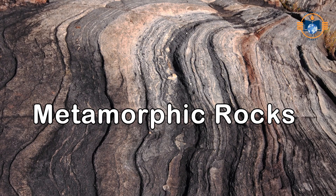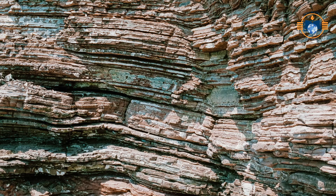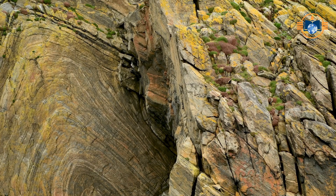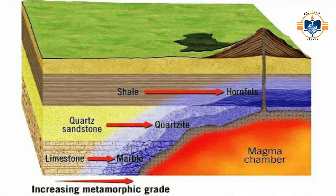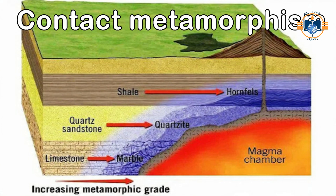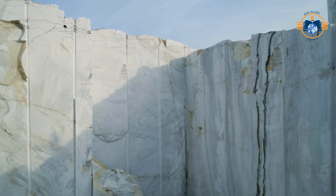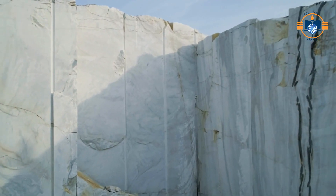Metamorphic rocks were originally a sedimentary rock, an igneous rock, or even another sort of metamorphic rock. Metamorphism literally means change in form. Rocks that are deeply buried underground can become subject to very high temperatures and intense pressures. Being in these environments for millions of years will change the rocks physically or chemically, or both. Sometimes, already buried rocks may come in contact with hot igneous material and, without becoming molten themselves, they become baked or cooked – this is known as contact metamorphism. When limestone is subjected to metamorphism, it becomes harder and more crystalline, and changes into marble.